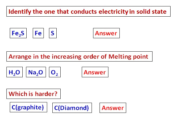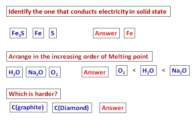Identify the one that conducts electricity in solid state: from Fe2S — Fe and S — only Fe is a metal, therefore Fe is the answer. For the second question, arrange in increasing order of melting point for water, Na2O, and oxygen. Oxygen will have the lowest because it's a molecular compound. Water comes next. Then Na2O, being an ionic compound, will have the highest melting point.